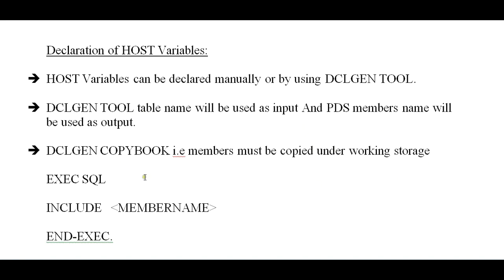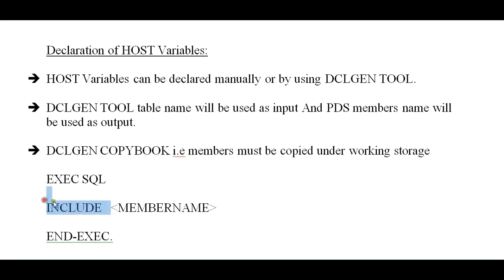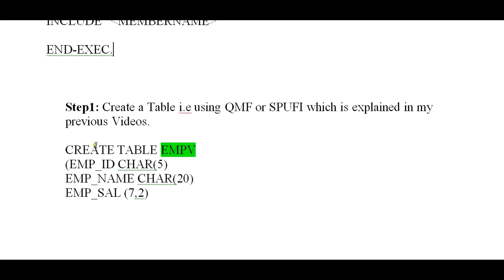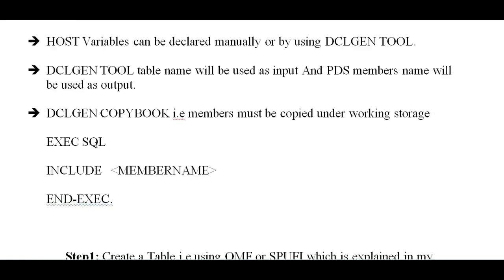The DCLGEN copybook — that is, the PDS member — must be copied under the working storage section using EXEC SQL INCLUDE member-name. So let us assume you have created a table; the PDS member is generated with the table properties and stored in a copybook library. In order to call that copybook, you need to include the statements between EXEC SQL and END-EXEC.